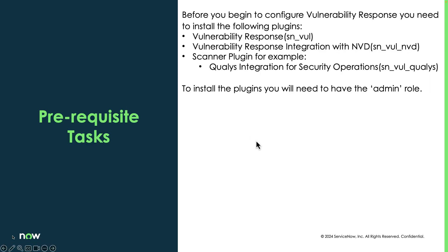As far as prerequisite tasks, the main thing we need to do is make sure the following plugins are installed: vulnerability response — which includes any of its dependencies — the vulnerability response integration with NVD, and some kind of a scanner plugin. Today we're going to be using the Qualys integration for security operations. To install any of these plugins, you need to have the admin role, or have your system admin install them for you.